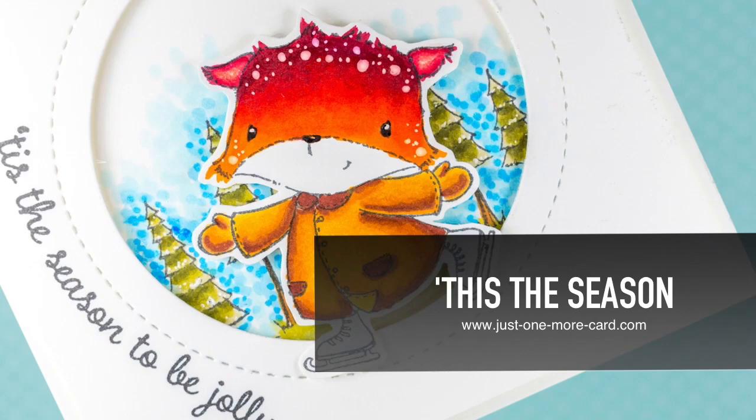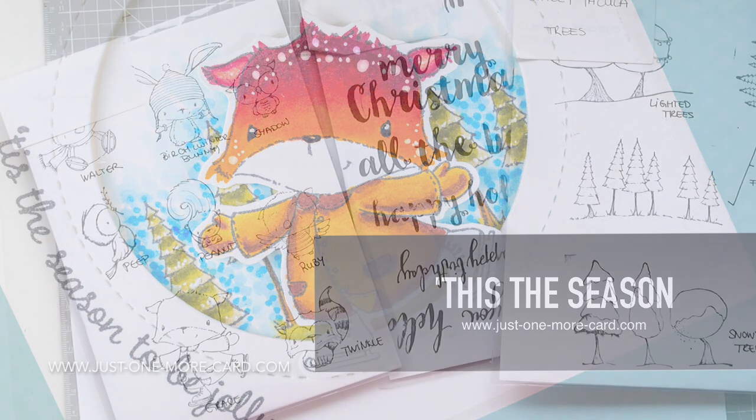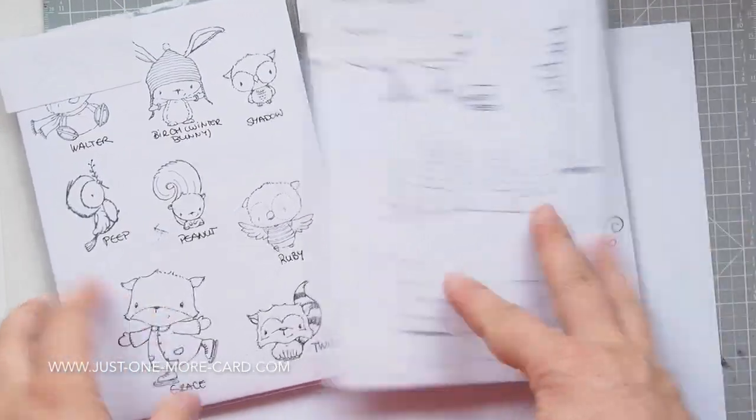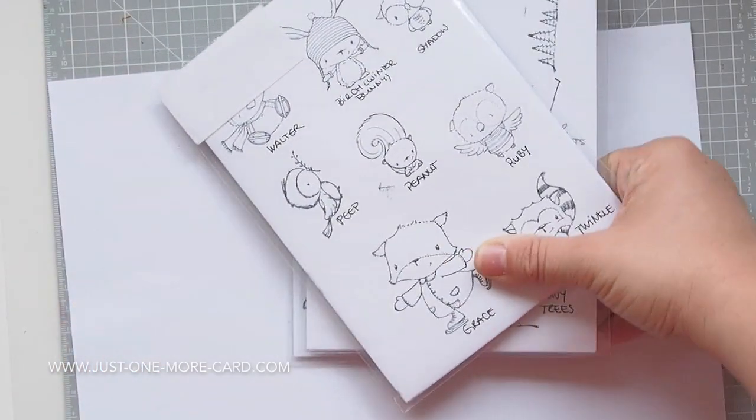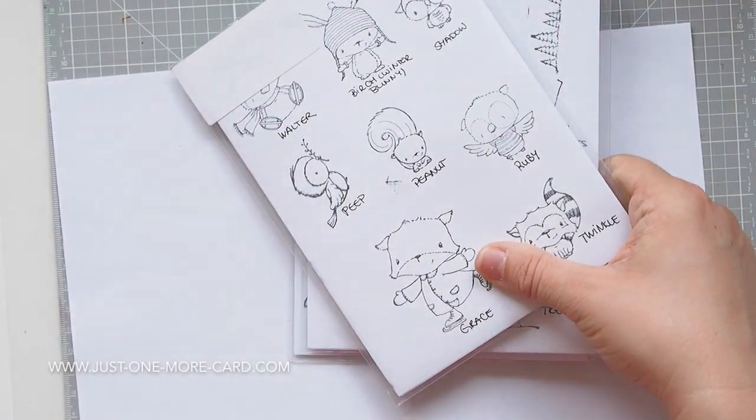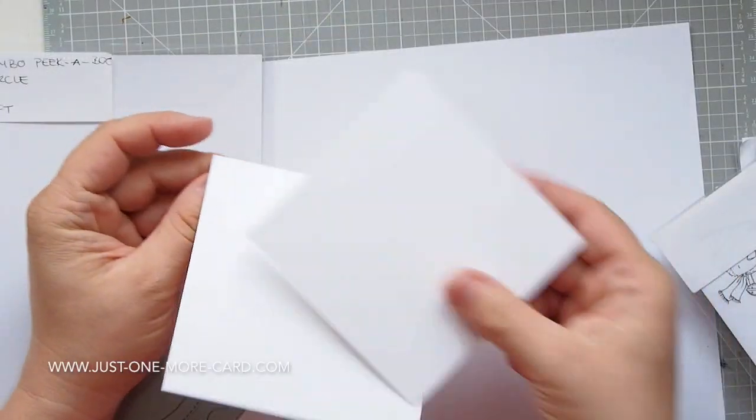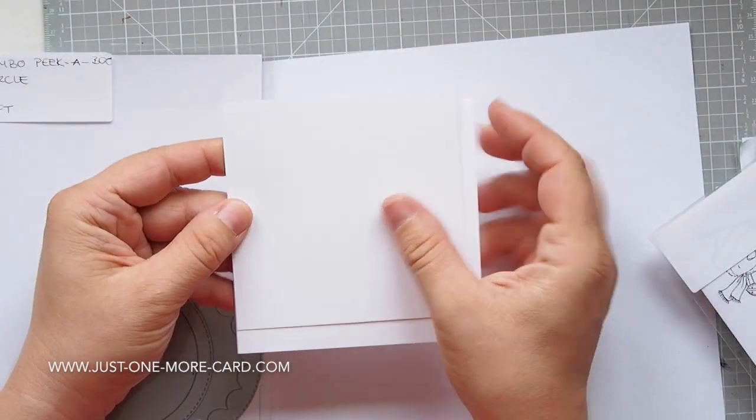Hi guys, welcome! This is Julia from Just One More Card and I have a new video for you featuring stamps by Purple Onion Designs. We're going towards winter here in the northern hemisphere. I'm so looking forward to it, so I am in the mood to create cold cards. Using these cute stamps by Purple Onion Designs, I prepared a square card base and have some Copic-friendly paper here.